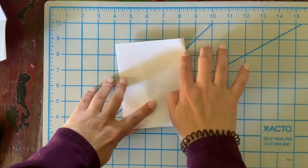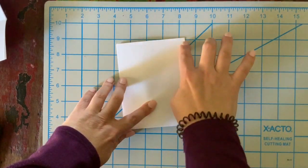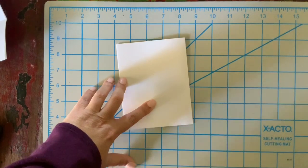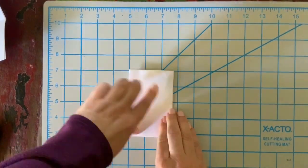Then you're going to turn it and fold it in half again, again reinforcing the crease. Turn it one more time and make your third fold.